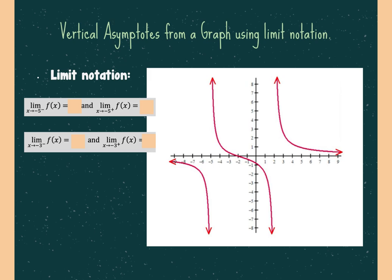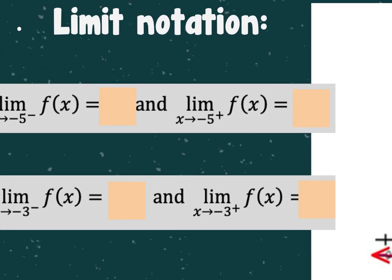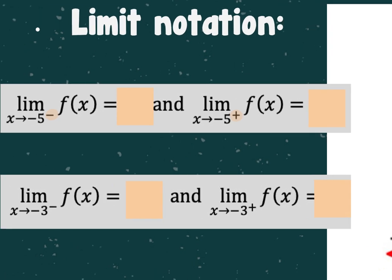All of that was Algebra 2 — hopefully that seemed a little familiar. Now we're going to use limit notation to talk about these vertical asymptotes. For every vertical asymptote, you have to do left and right, using the minus and plus symbols. This is read as: as x is approaching negative five from the left, or as x is approaching negative five from the right. So for every vertical asymptote, you have one with the minus and one with the plus.